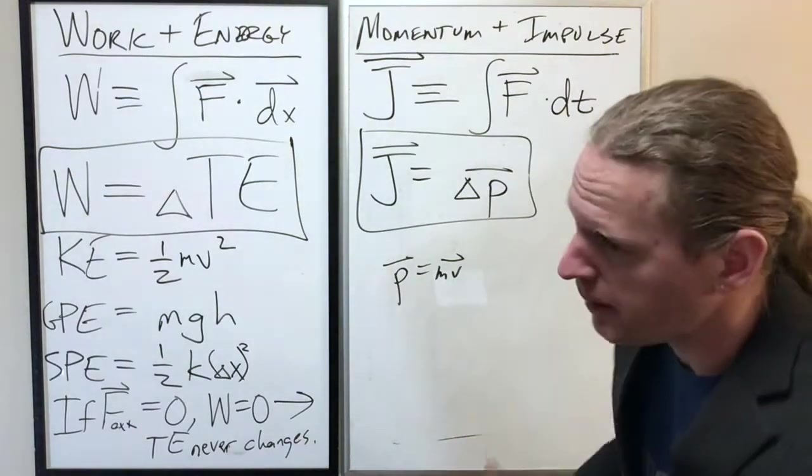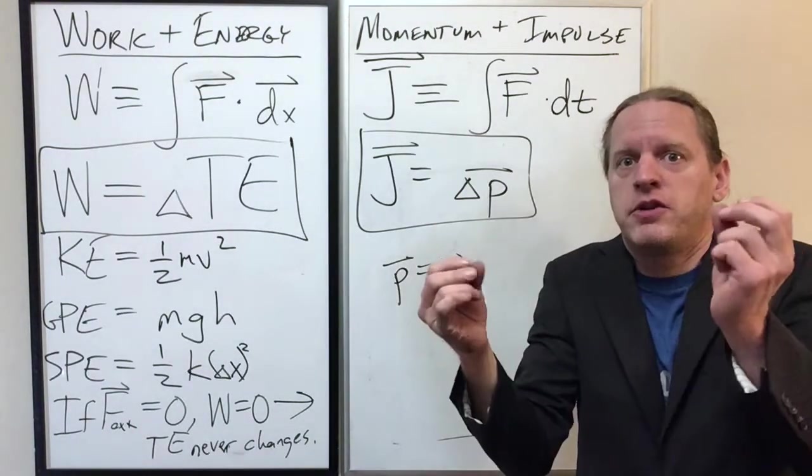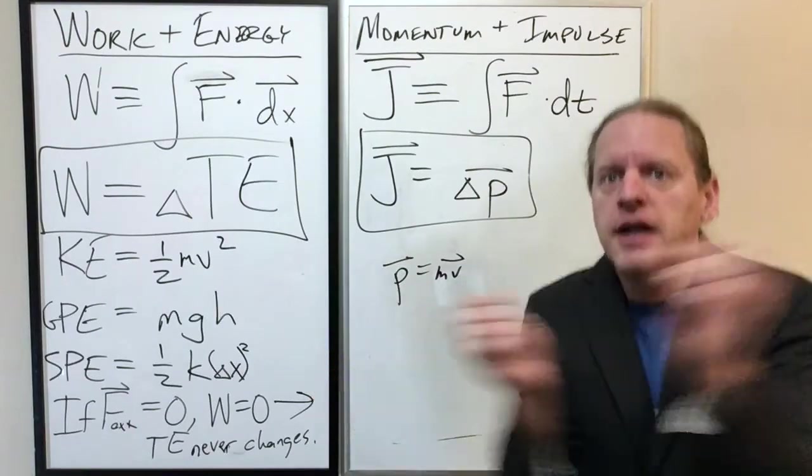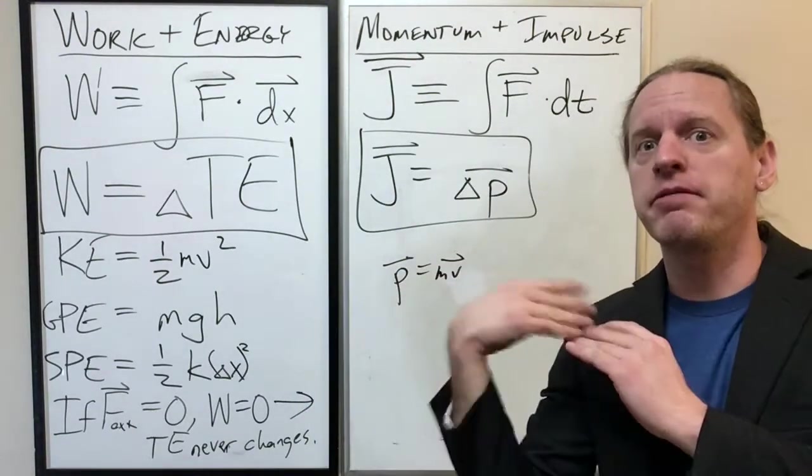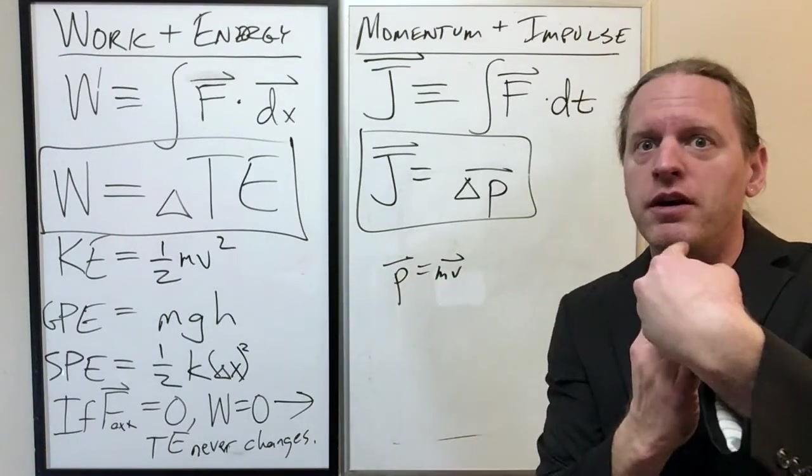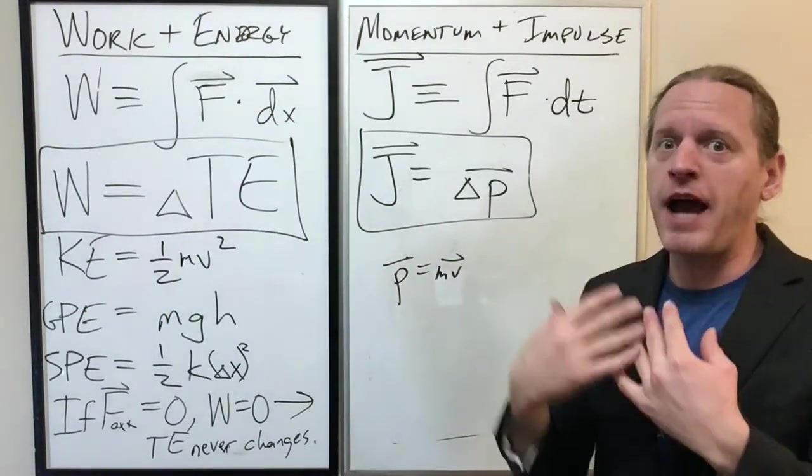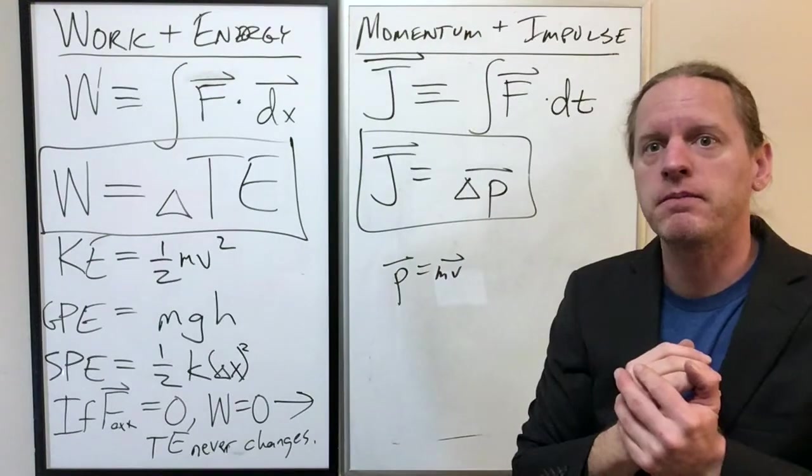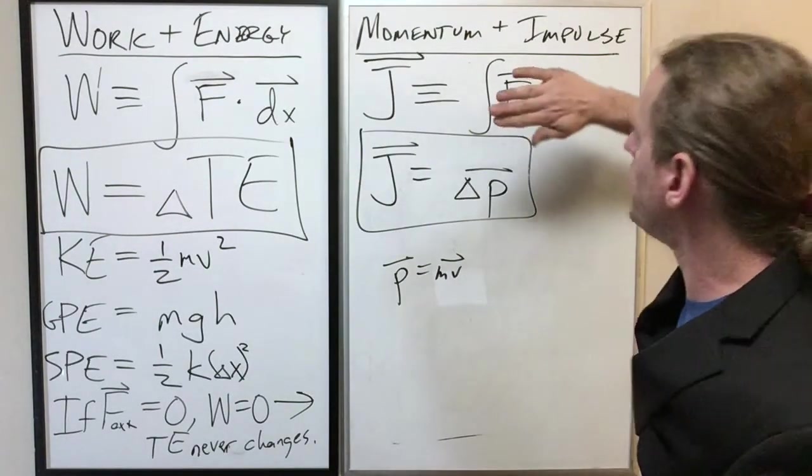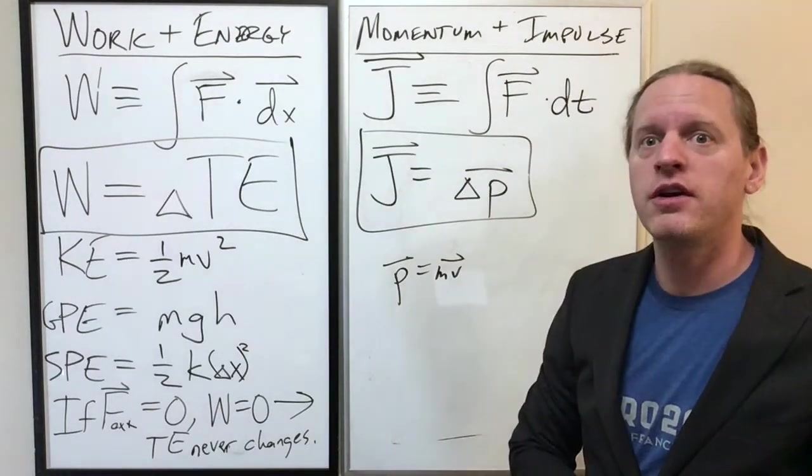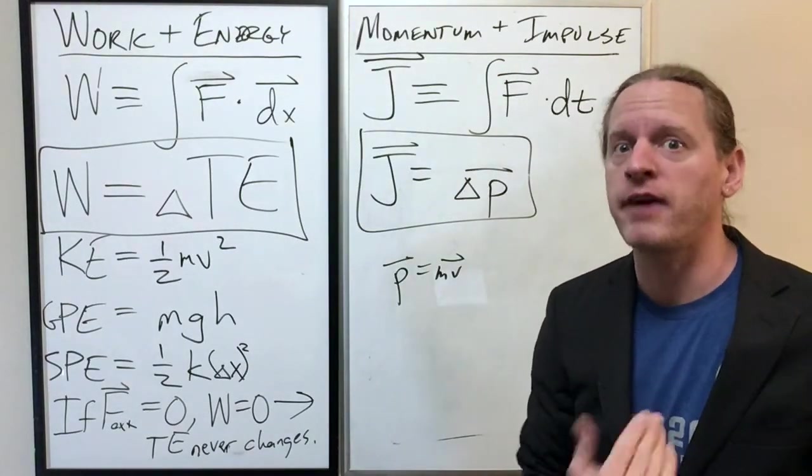Now it's very possible inside that system, two particles, two air molecules for example, can collide. They can exchange momentum. They can transfer momentum from one particle to another. But that can never happen from outside the system to in. So when you have an isolated system, when you take away any external force, that leads us to the law of conservation of momentum.